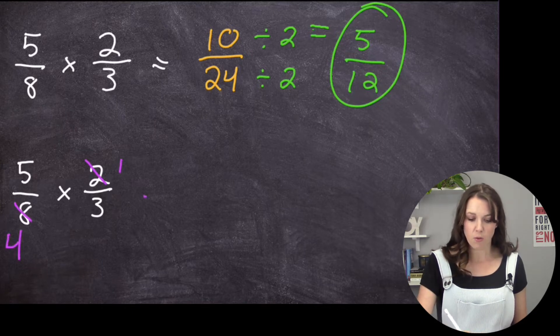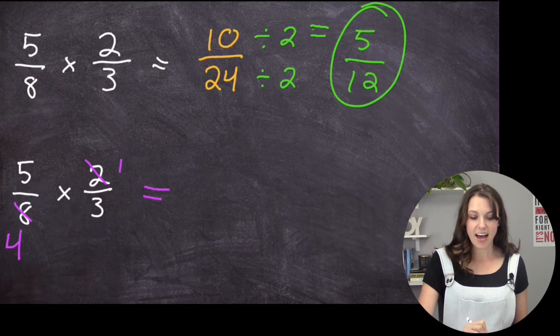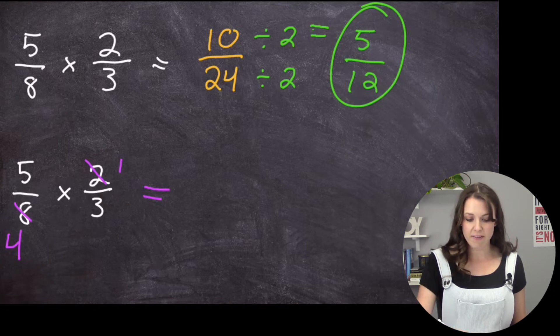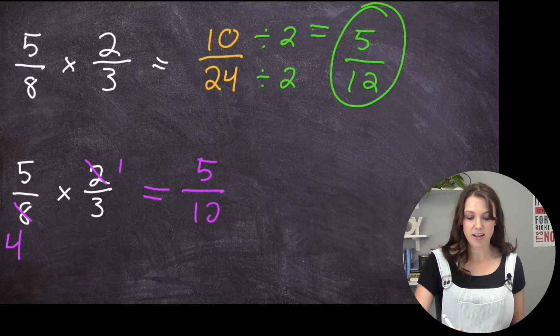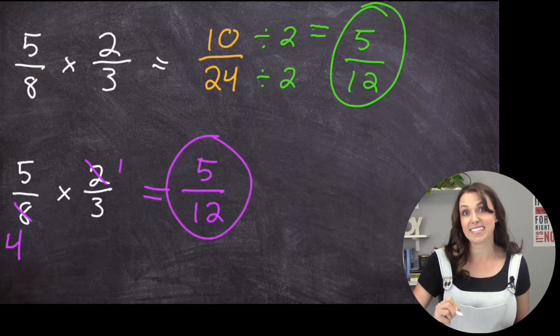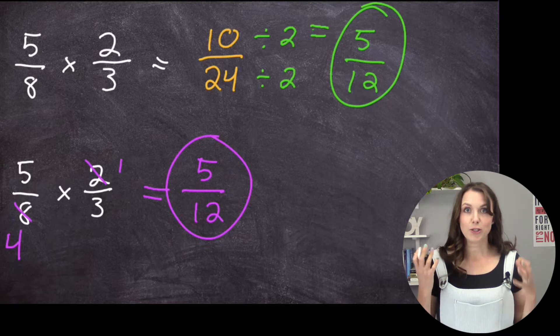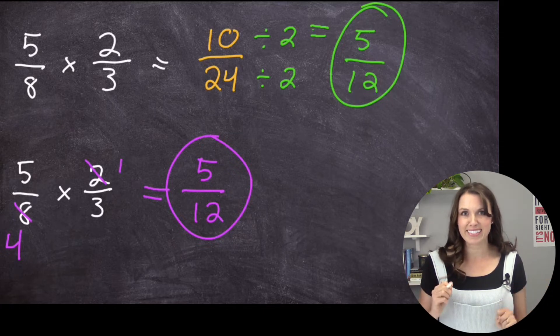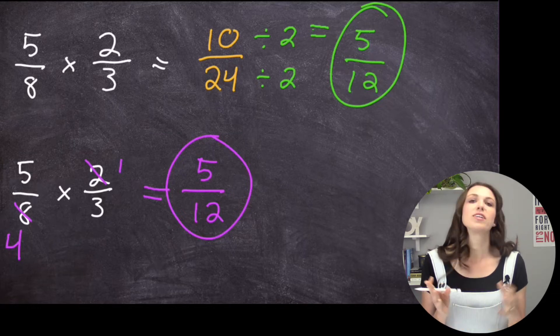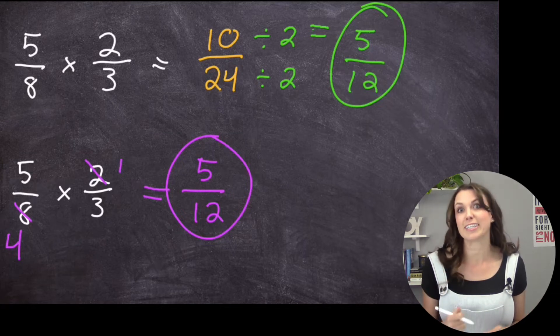So now I'm going to just multiply across again. 5 times 1 is 5. And 4 times 3 is 12. So notice here, it's the exact same answer. You can do it either way. But I really like doing the cross-canceling. I feel like doing a little extra work at the front makes it a little easier at the end.